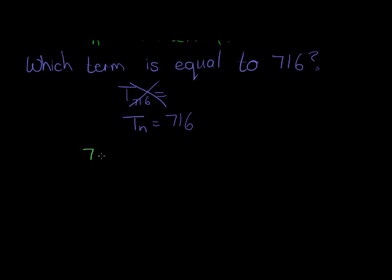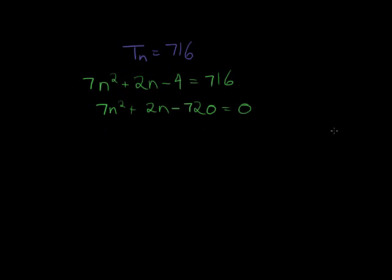So which term is equal to that? So my term value is equal to that, which means I have 7 n squared plus 2 n minus 4 is equal to 716, which means it's 7 n squared plus 2 n minus 720 is equal to 0. And it's going to be quite a task putting this in two brackets. If you're up to it go ahead, but I am going to use the quadratic formula.